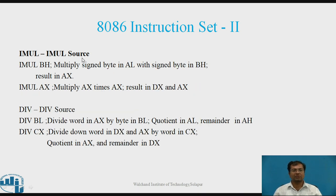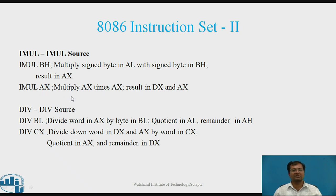IMUL Source — for signed multiplication. Example: IMUL BH — multiplies signed byte in AL with signed byte in BH. The difference between MUL and IMUL is that in IMUL, signed numbers are used to find the product. Second example: IMUL AX — multiplies AX by AX; result in DX and AX.